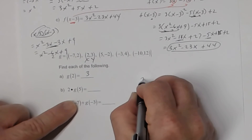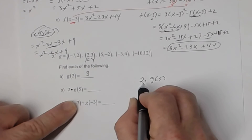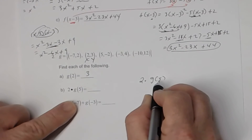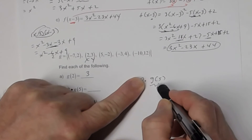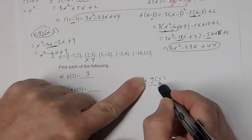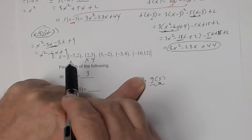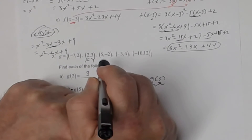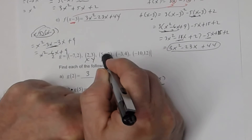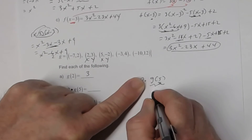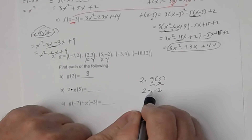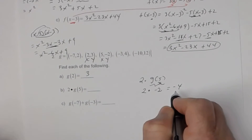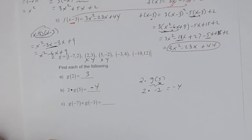In part b, you're asking what is 2 times g of 5. I've got to figure out what g of 5 is. g of 5 means what is the y-value when x is 5. When x is 5, my y-value is negative 2. So g of 5 is negative 2, and that's being multiplied by 2. So 2 times negative 2 is negative 4. Therefore, 2 times g of 5 is equal to negative 4.